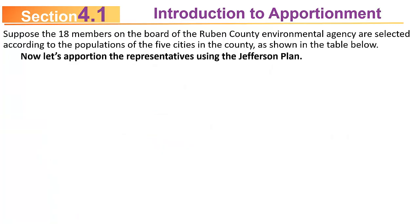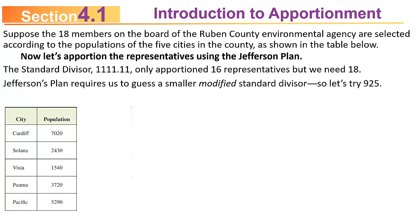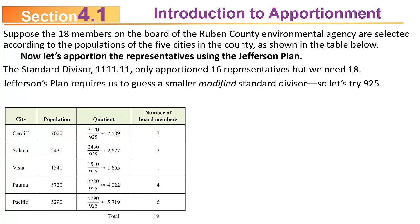Now let's apportion using the Jefferson plan. The standard divisor is approximately 1,111.11, and it only gave us 16 — we need 18. So we'll choose something smaller; let's guess 925. Dividing by 925: Cardiff gives 7.589, Solana 2.627, Vista 1.665, Palma 4.022, and Pacific 5.719. Rounding down and adding up gives 19 — too many. So 925 was too small.